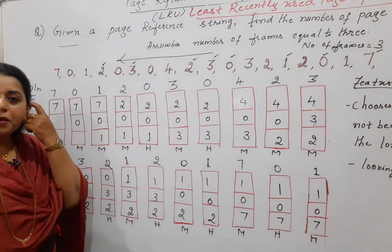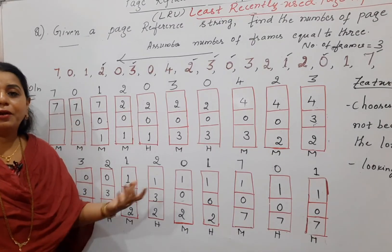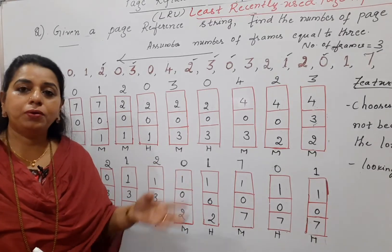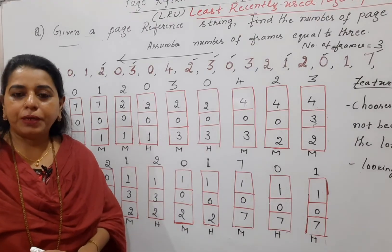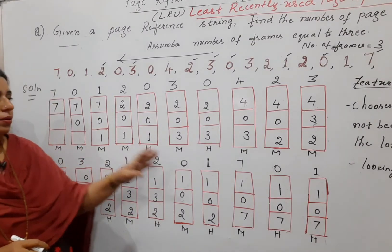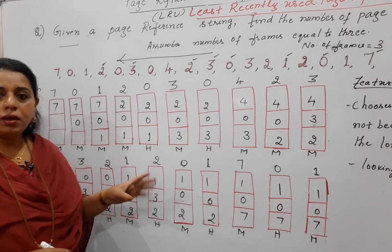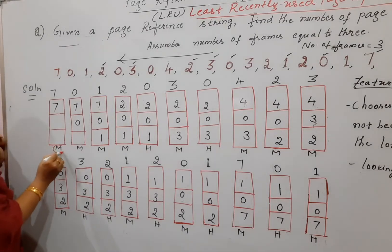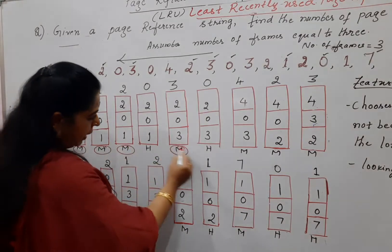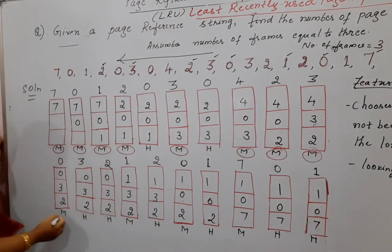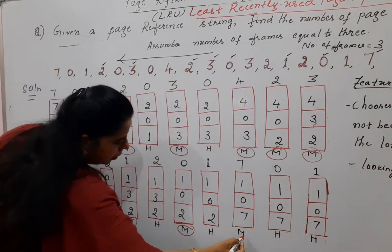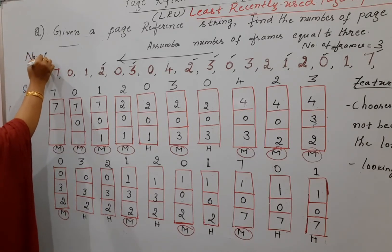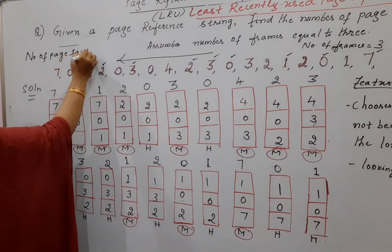So this is how you complete the solution. Once you remember the logic it is very easy. These kinds of problems are asked for six to nine marks, and sometimes they ask you to use two or three different algorithms on the same reference string to compare the number of page faults. Now count the number of times M appears: 1, 2, 3, 4, 5, 6, 7, 8, 9, 10, 11, 12. The letter M appears 12 times, so the number of page faults equals 12.